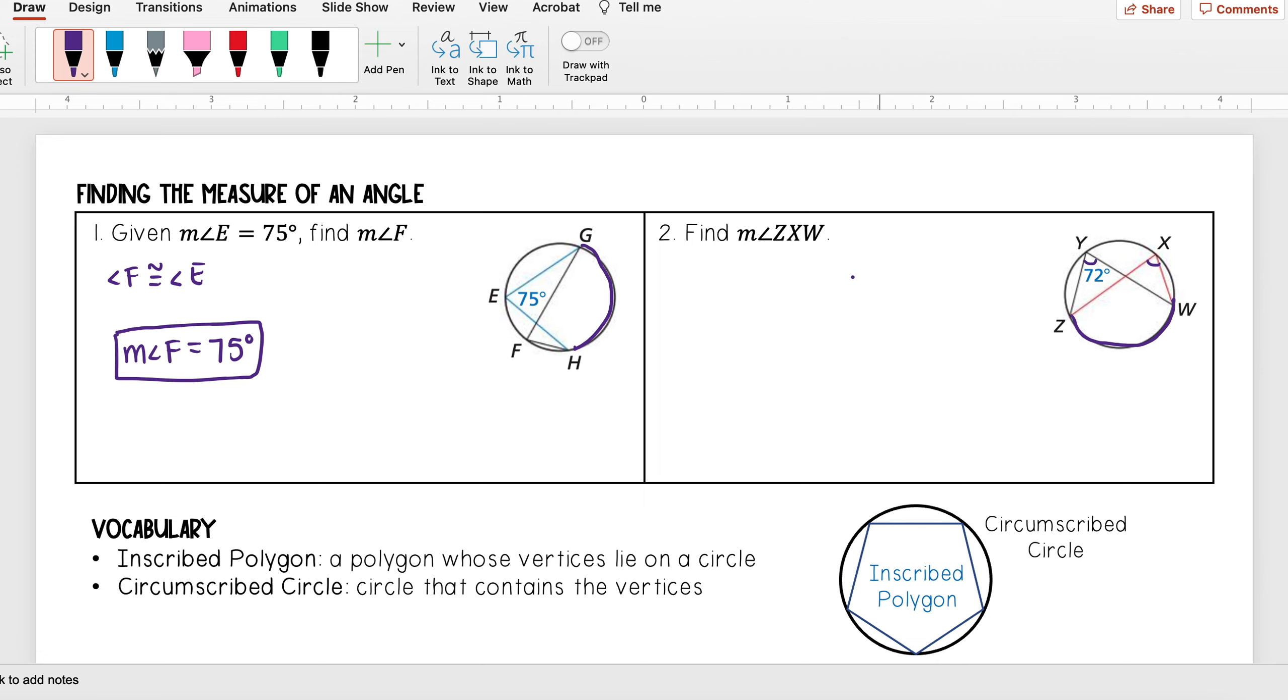So that means the measure of angle ZXW is also going to be 72 degrees.